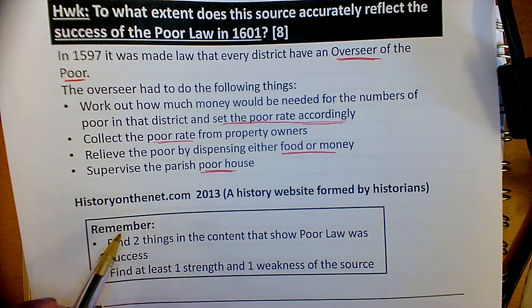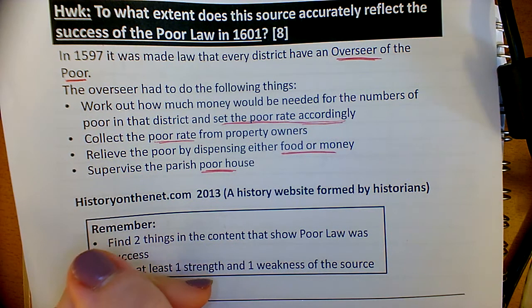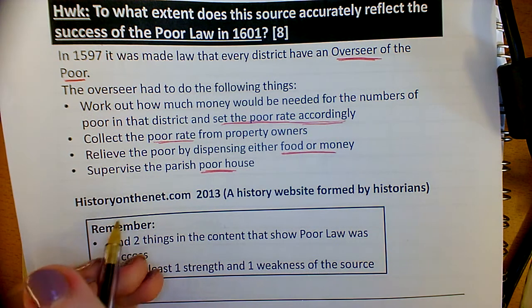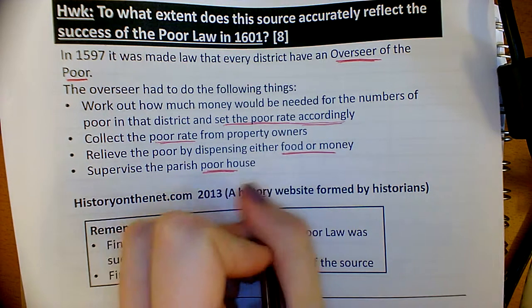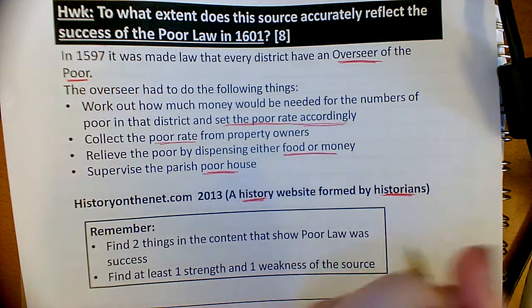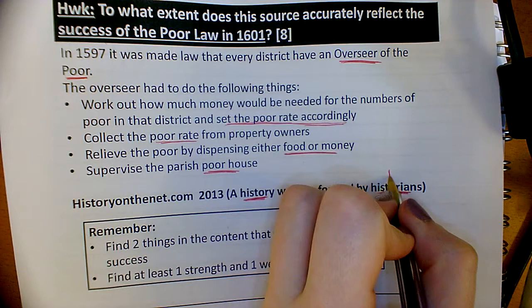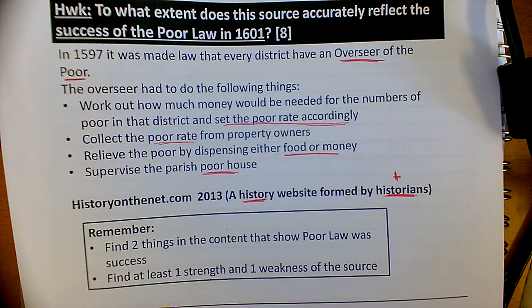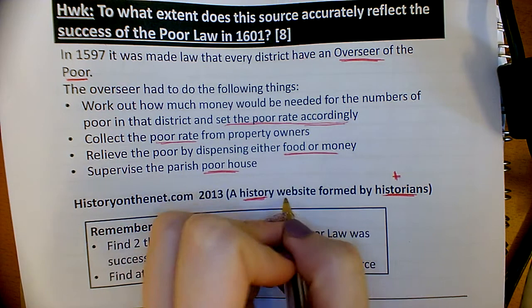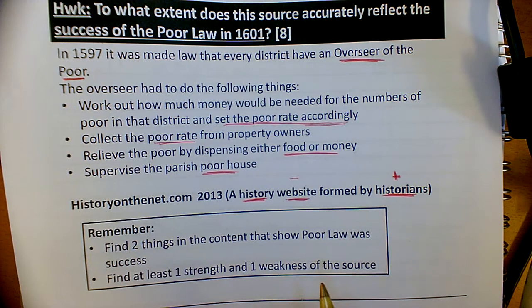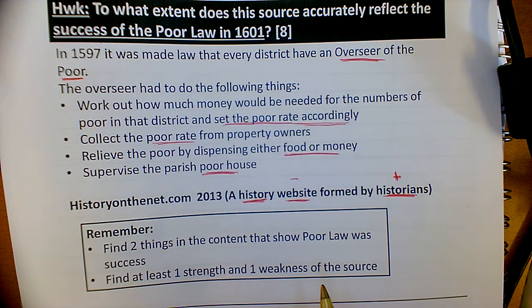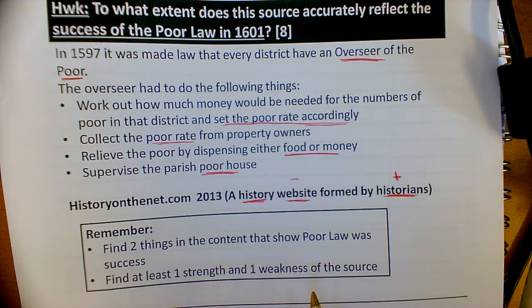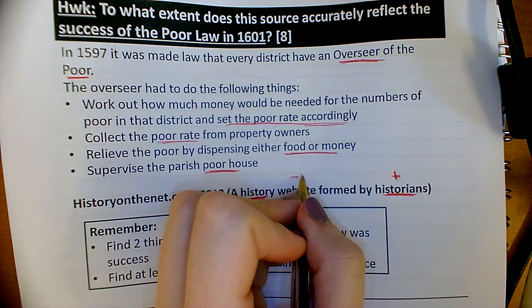Then for origin and purpose, you are using that to figure out a strength and a weakness of the source. You might pick that it's a history website created by historians — that's where it comes from, and that's a good thing because historians are well-researched, so they would have known what they were talking about. I would normally pick the fact that it's a website to say that's a weakness, because websites can most of the time be edited and changed, and they're always secondary. But in this case, being secondary is actually a good thing because it means the historians had time to research. So it's kind of a bit of both.